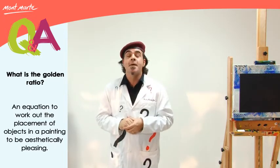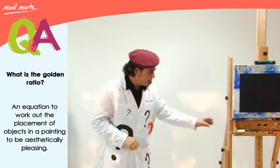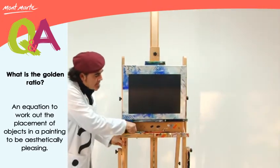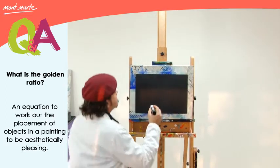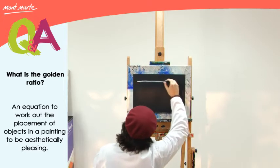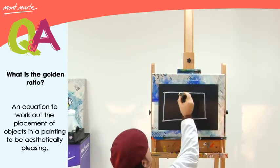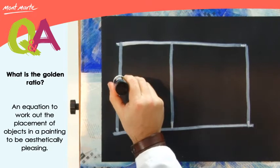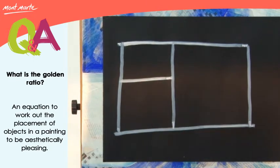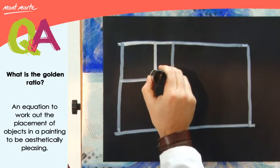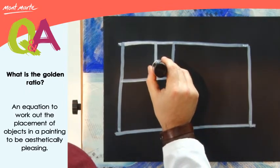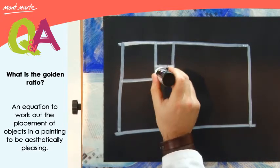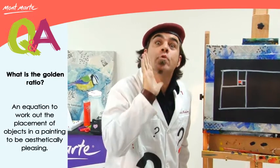Whilst we won't go into the numbers, I'll show you how it works. If I draw myself a rectangle, inside this rectangle I create a square of four equal sides. I then divide the rectangle beside the square into an equal square, and I can keep moving through. This area here is our golden mean.